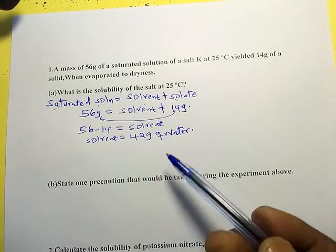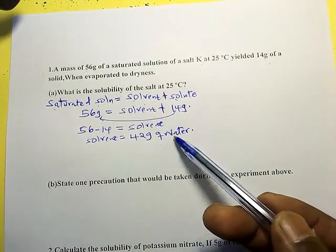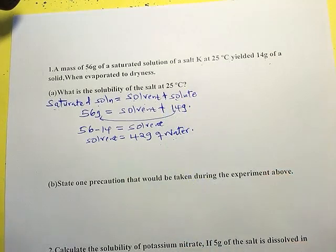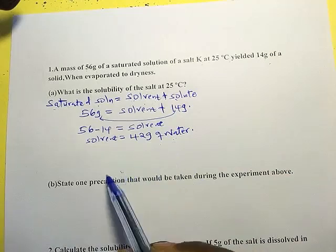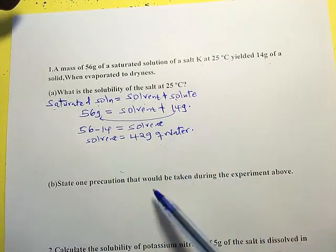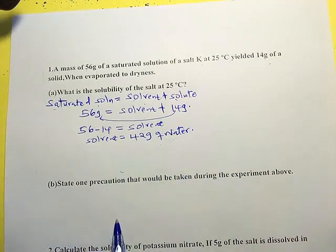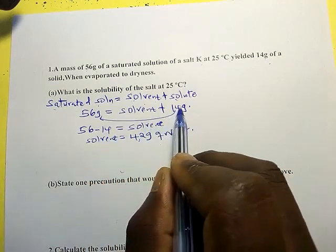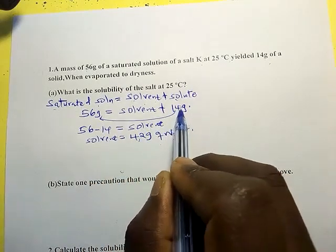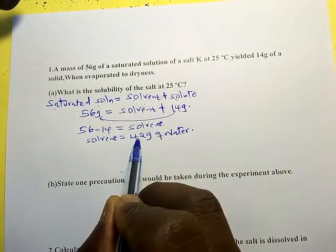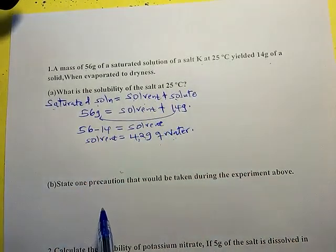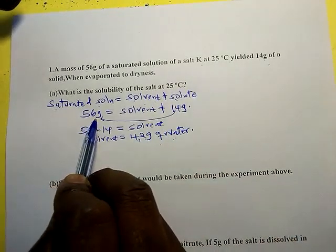Water is the common solvent used in the laboratory, though we have other solvents. So we have 14 grams of solute dissolved in 42 grams of water to form a saturated solution of 56 grams.